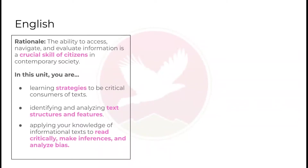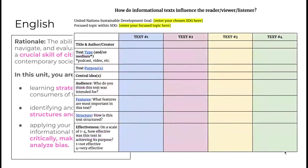You've been working on identifying and analyzing text structures and features, and then applying your knowledge of text to read critically, make inferences, and analyze bias. So far, you have located four different texts related to the focus within your chosen SDG, and you've evaluated each of those texts and determined how effective each one has been in achieving its purpose.